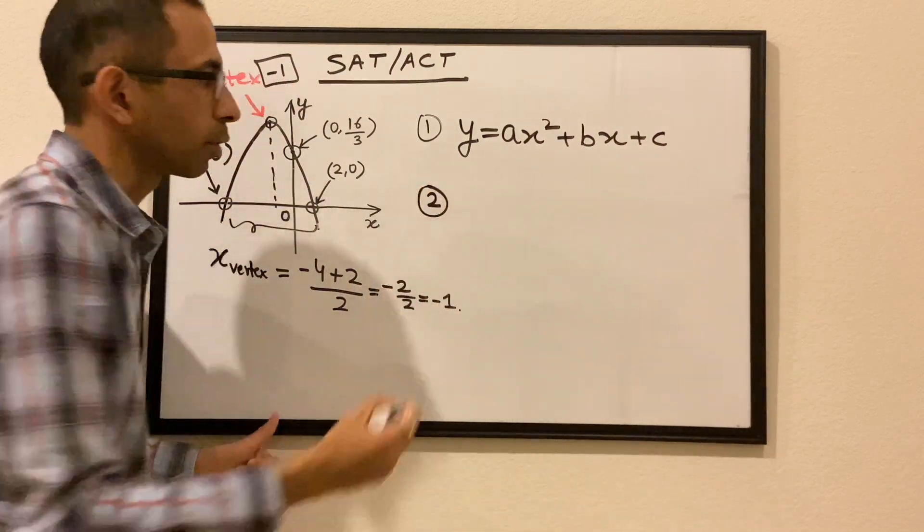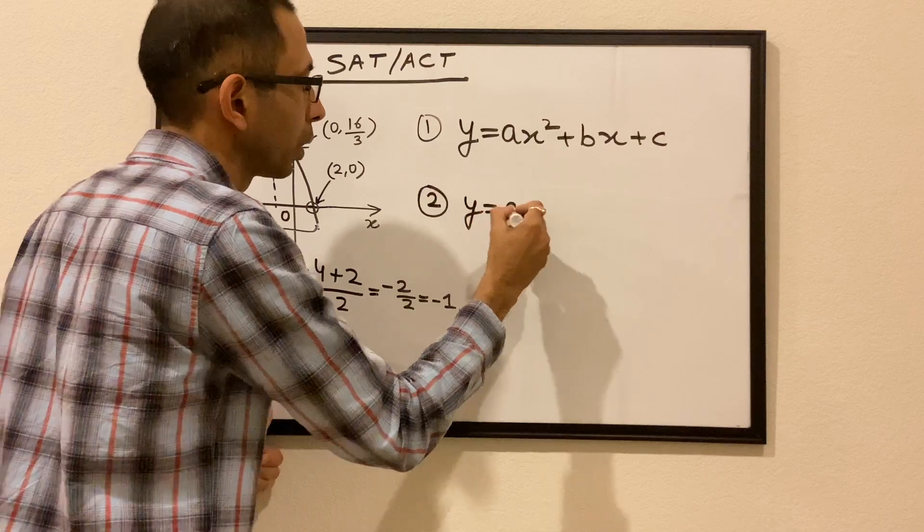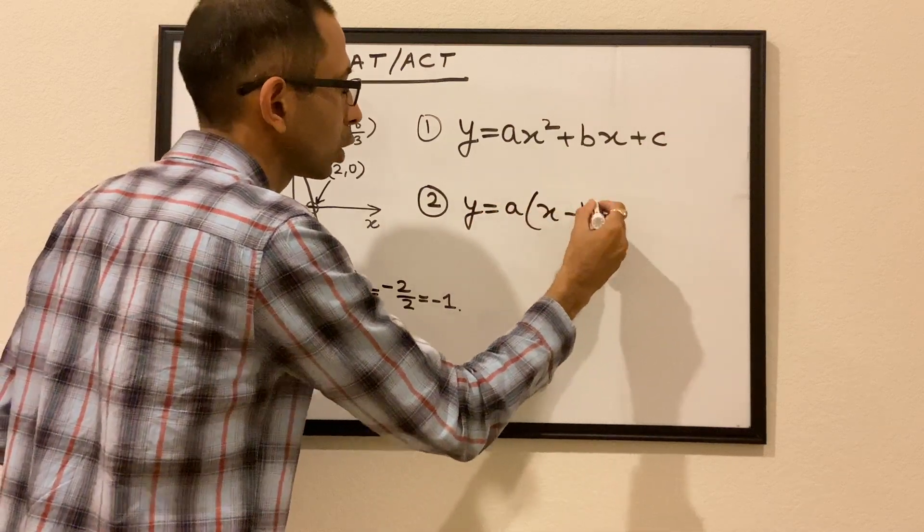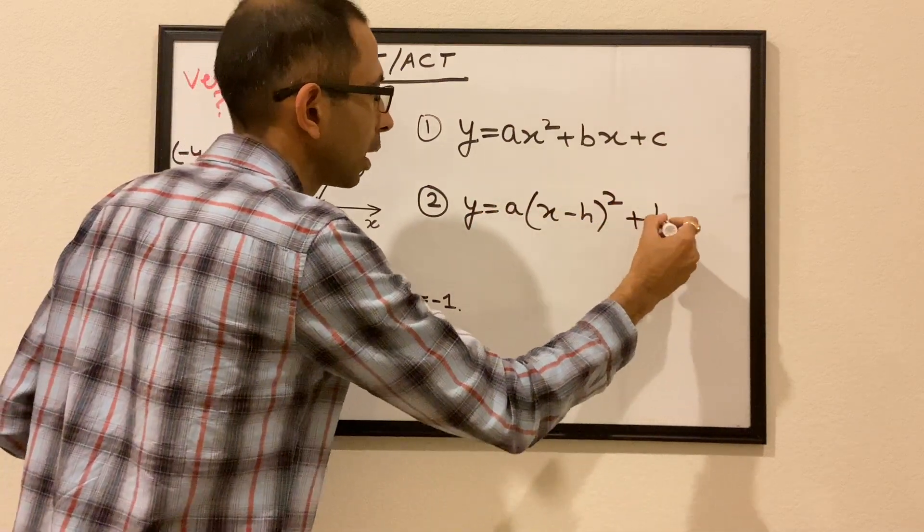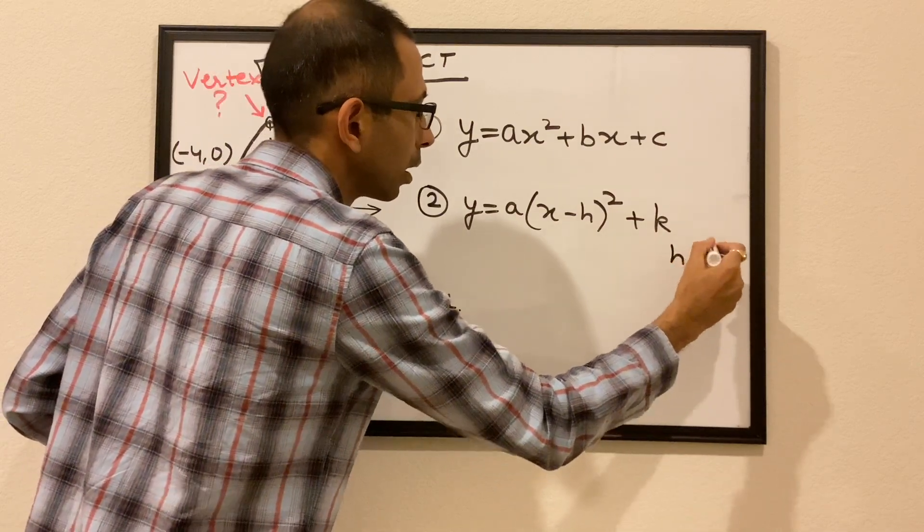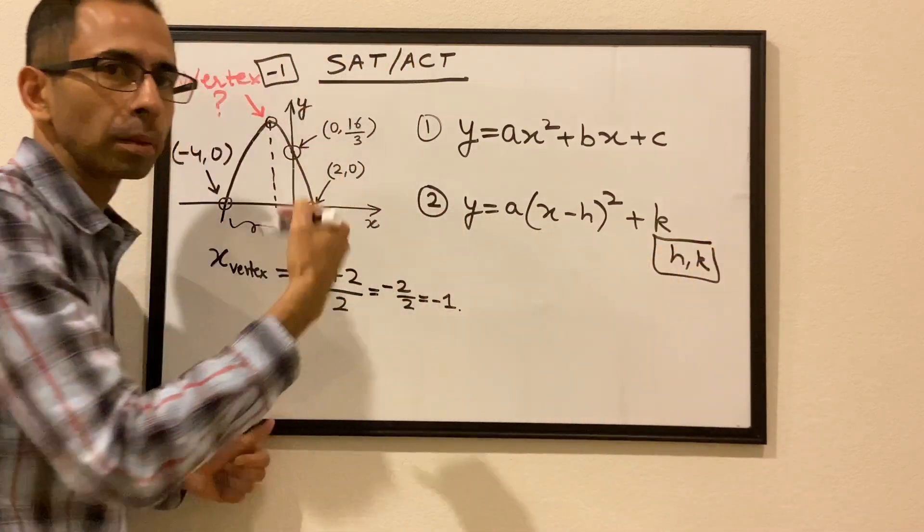The second is the vertex form, which is y equals a(x-h)² plus k, where h,k represent the vertex of the parabola.